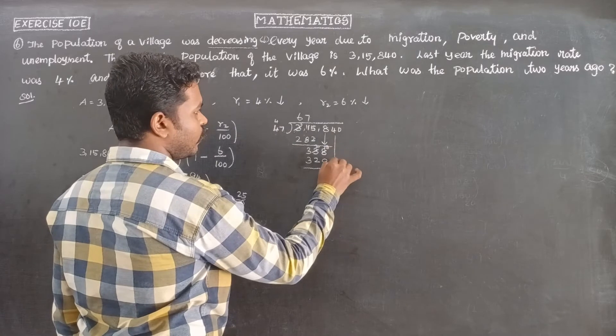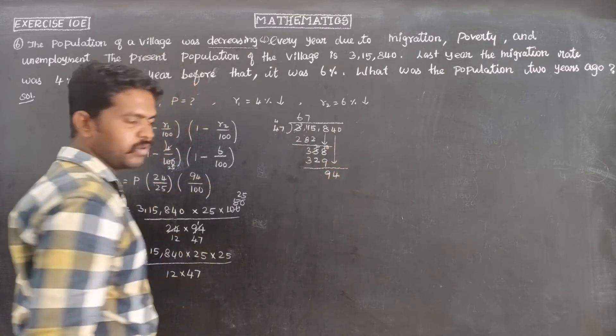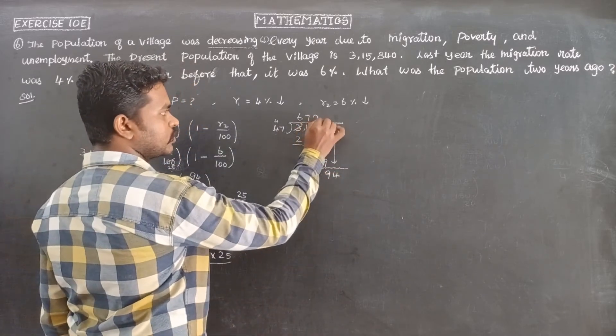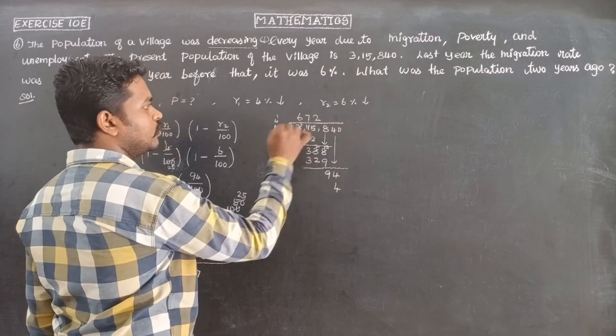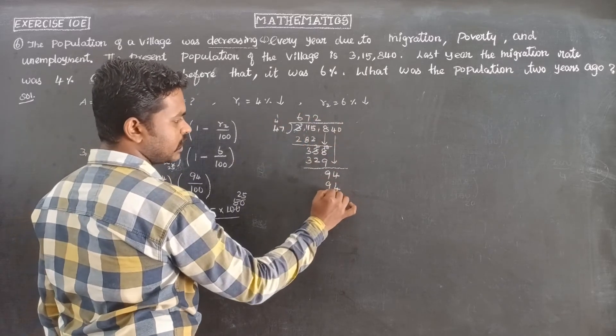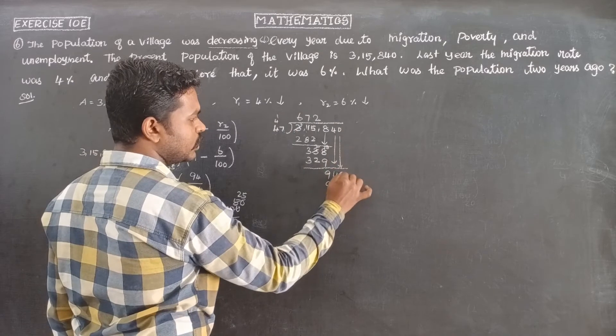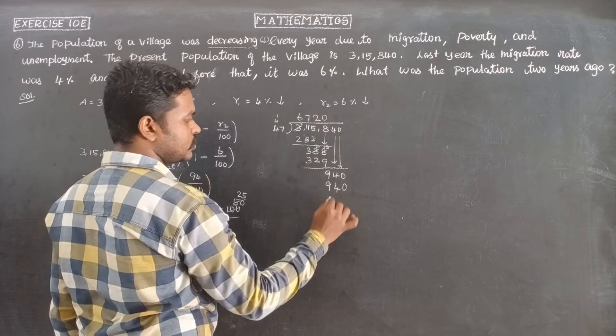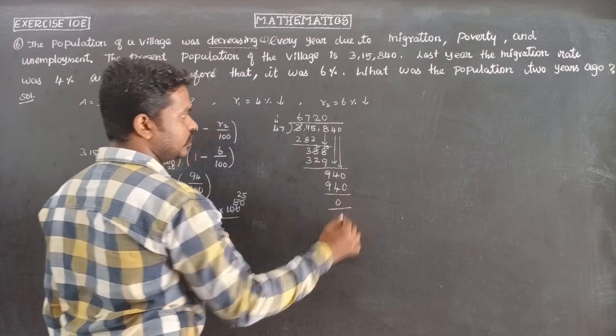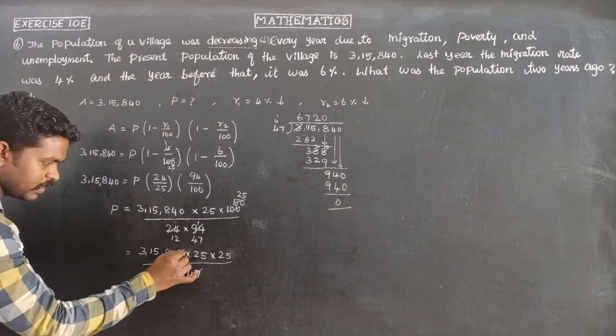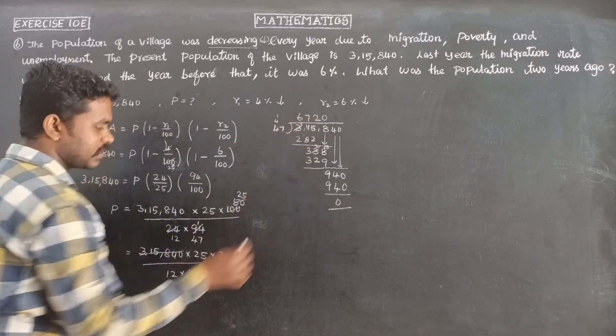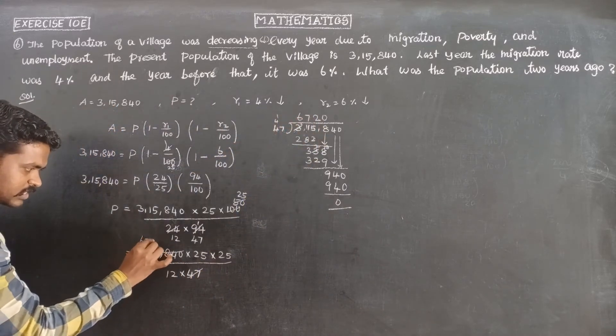Next number is 94. Checking 2 times: 2 times 7 is 14, remaining 1. 2 times 4 is 8, 8 plus 1 is 9. So the remainder is 0. Therefore 47 divides into it giving 6,720.